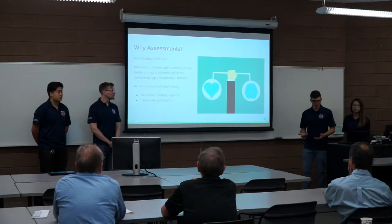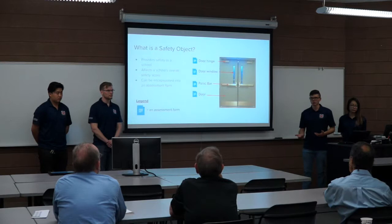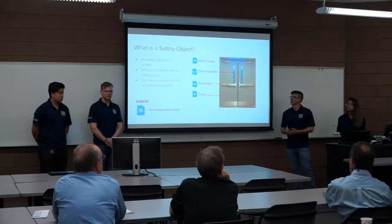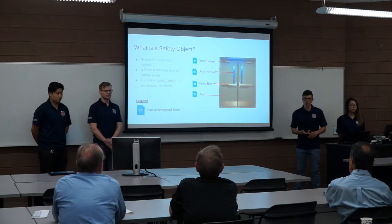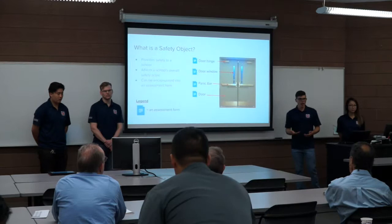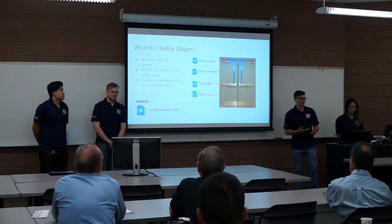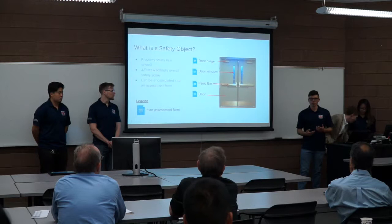To provide more clarification, what do we mean by a safety object? If you look at this double panel door, we see it's made up of several different components we're calling safety objects — like a door hinge, a window, a panic bar, and the door itself. During an assessment, each one of these individual components provides safety in its own way that affects the overall school and how it protects students.